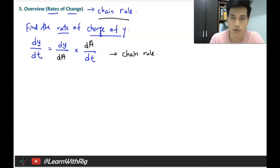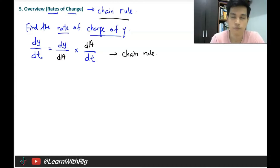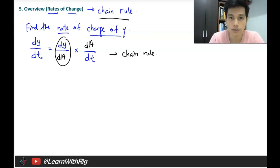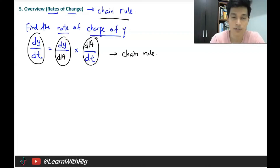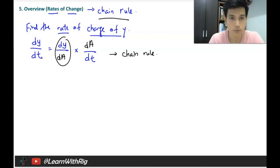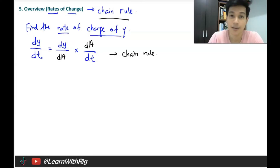It's called chain rule because you are forming a chain using two different derivatives. You combine them to get your final answer depending on what they ask for. If you don't understand, don't worry — we'll go through the examples together.